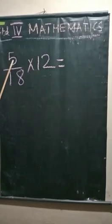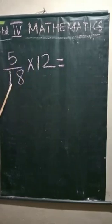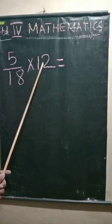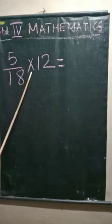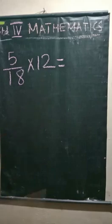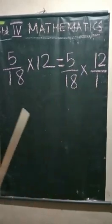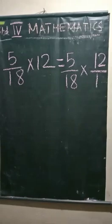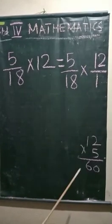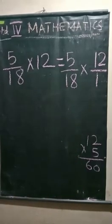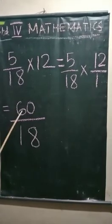Next question. 5 by 18 into 12. What is the first step? Change this into fractional form. First, write this fraction, then the multiplication sign, and then write its fractional form. Fractional form of 12 is 12 by 1. What is the next step? Numerator into numerator, denominator into denominator. 12 fives are 60. 18 ones are 18. See? 60 by 18.